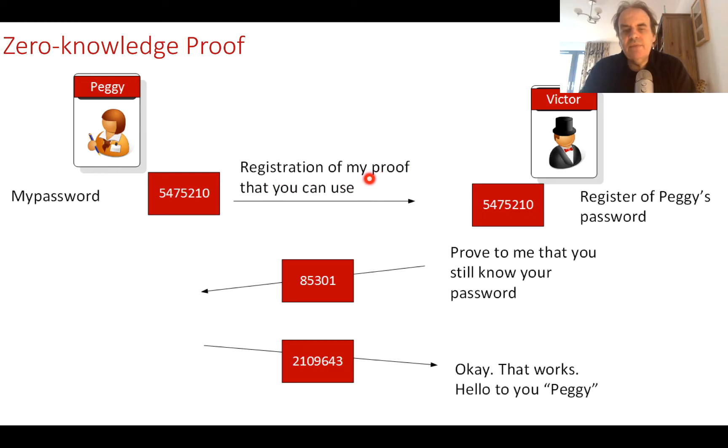By looking at the seed value, it shouldn't be possible for Eve to come in and look at the value and determine the password. The puzzle is just too difficult. The same for Victor - Victor can't actually tell what Peggy's password is.